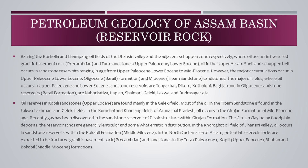Barring the Bohua and Champang oil fields of the Dhanseeri Valley and the adjacent Shapan zone respectively, where oil occurs in fractured granitic basement rock (Precambrian) and Tura sandstones (Upper Paleocene-Lower Eocene), oil in the Upper Assam shelf and Shapan belt occurs in sandstone reservoirs ranging in age from Upper Paleocene-Lower Eocene to Mio-Pliocene. However, the major accumulations occur in Upper Paleocene-Lower Eocene, Oligocene Barail formation, and Miocene Tipam sandstones.